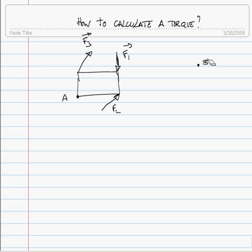Whenever you calculate torque, you always have to specify about which point you calculate that torque. This usually refers to the axis of rotation at that particular point, perpendicular to the plane when dealing with two-dimensional problems. It only matters which point you pick if your system is not at equilibrium.